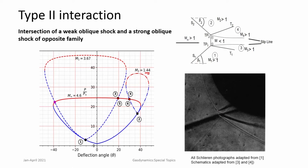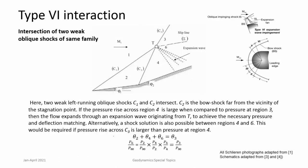The Schlieren image of such a shock interaction shows the shocks and a very dark region corresponding to the subsonic area. Type 2 interactions happen with a weak oblique shock and a stronger oblique shock of opposite families. Now let us look at type 6 interaction, which occurs with shocks of the same family. In type 6, there is already one shock — C1 is the body shock and C2 is the other shock. Both are of the same family and they interact at a particular point. A streamline below passes through two shocks, while one above passes through only one shock.